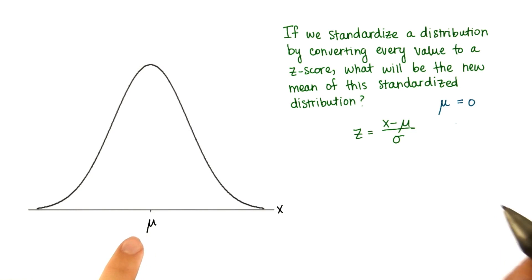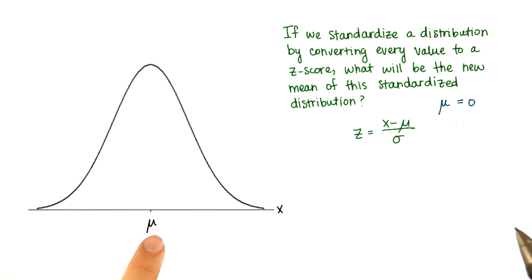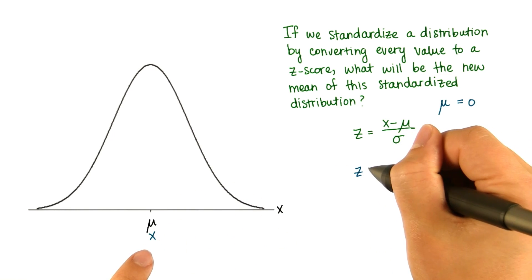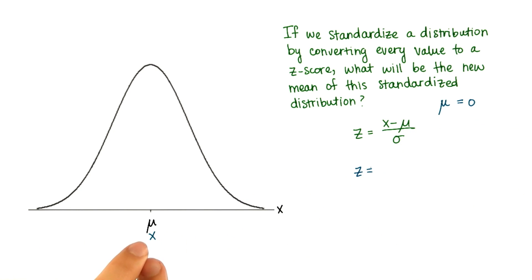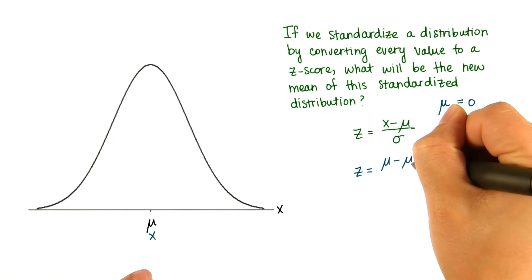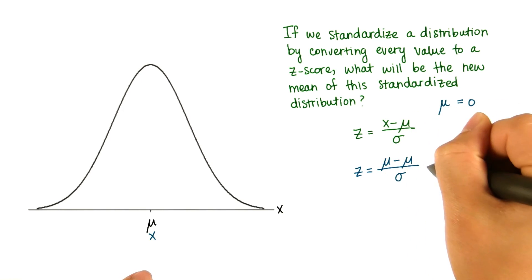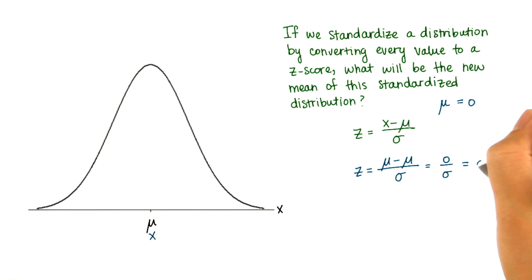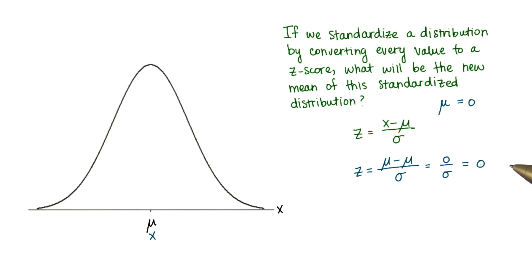Another way to look at it is: what's going to be the new z-score of the mean? Let's say that the mean is x. The z-score of the mean is basically how many standard deviations away from the mean is the mean? Well, that's 0. Instead of x, we have mu. Mu minus mu, divided by the standard deviation, is 0 divided by the standard deviation, which is just 0. So that's another way to look at it.